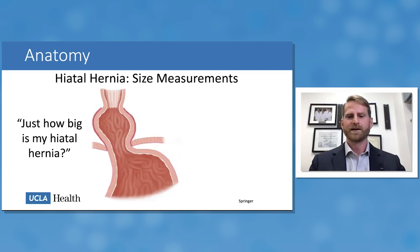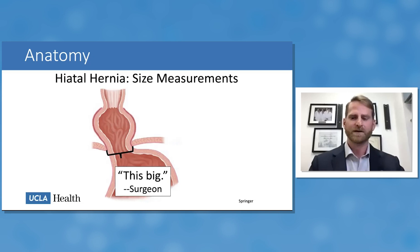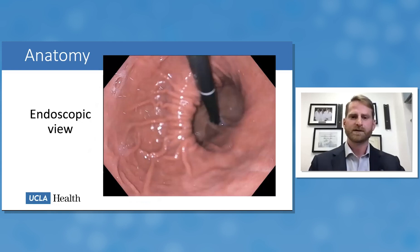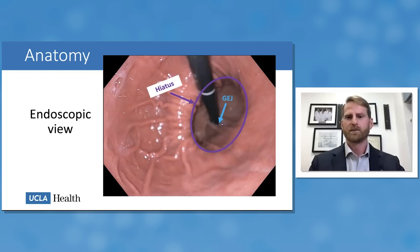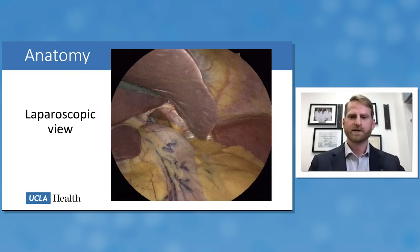Patients frequently ask how big their hiatal hernia is, but the answer depends on perspective. An endoscopist measures the axial dimension along the scope from a retroflexed view inside the stomach, looking back up at the GEJ and seeing the hiatus as a ring. This is shown in a retroflexed endoscopic view where the pinch of the diaphragm muscle around the stomach and the GEJ snug around the scope are clearly visible.